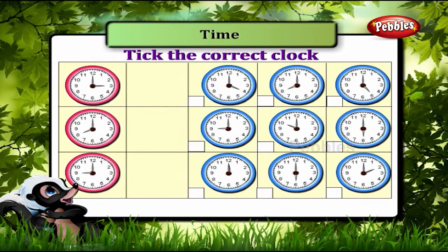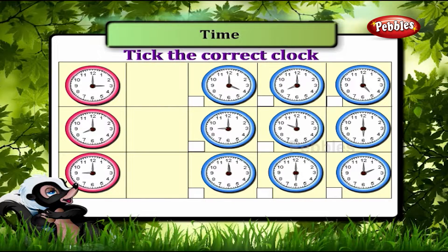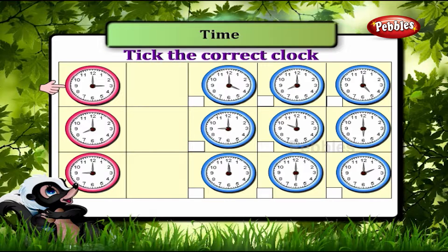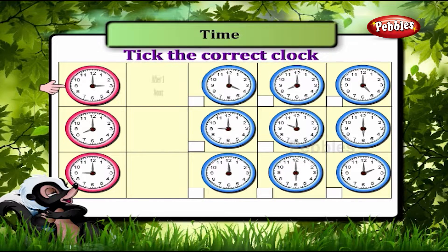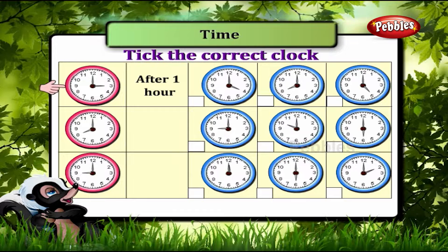Tick the correct clock. This clock shows 3 o'clock. After 1 hour, it will be 4 o'clock.